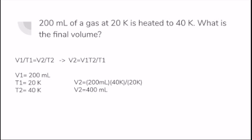Let's do another example problem. 200 milliliters of a gas at 20 Kelvin is heated to 40 Kelvin. What is the final volume? So we'll be using the formula V1 over T1 is equal to V2 over T2. And since we're trying to find the final volume, we're solving for V2, and we could do that by multiplying V1 and T2 and dividing it all by T1.